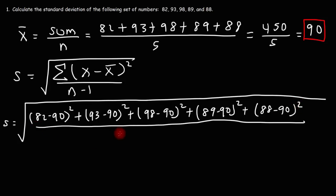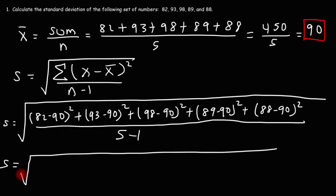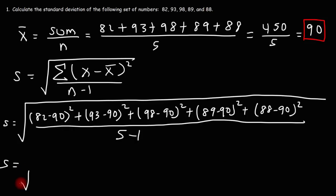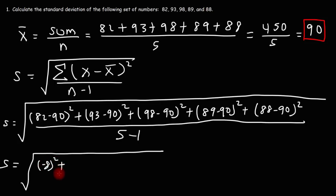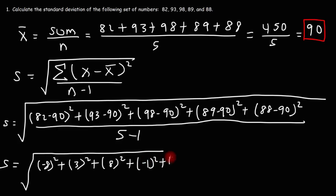So n is 5, and n minus 1 is going to be 5 minus 1, or 4. Now let's do this one step at a time. 82 minus 90 is negative 8, so this is going to be negative 8 squared. But once you square it, the negative sign won't matter. And then it's going to be plus 3 squared. 98 minus 90 is 8, and 89 minus 90 is negative 1. And then divide it by 4.